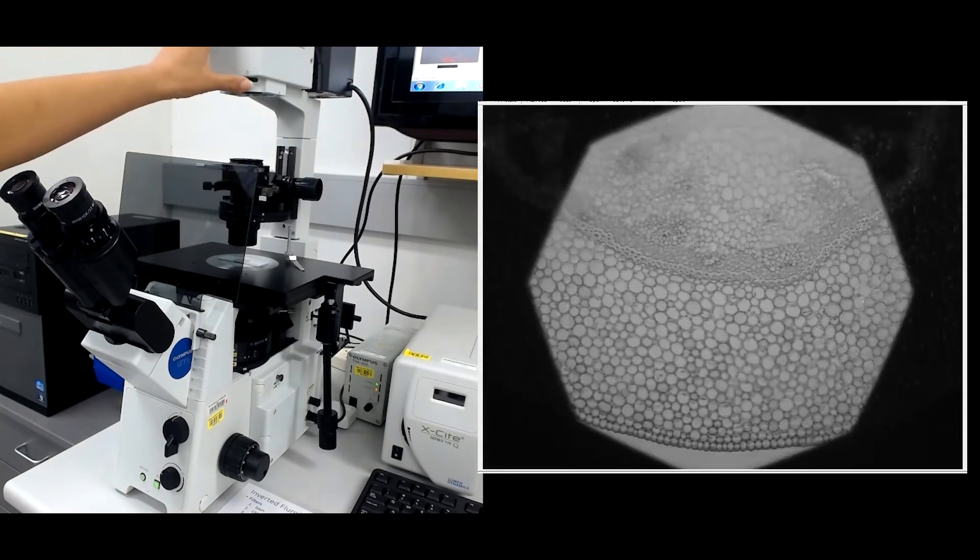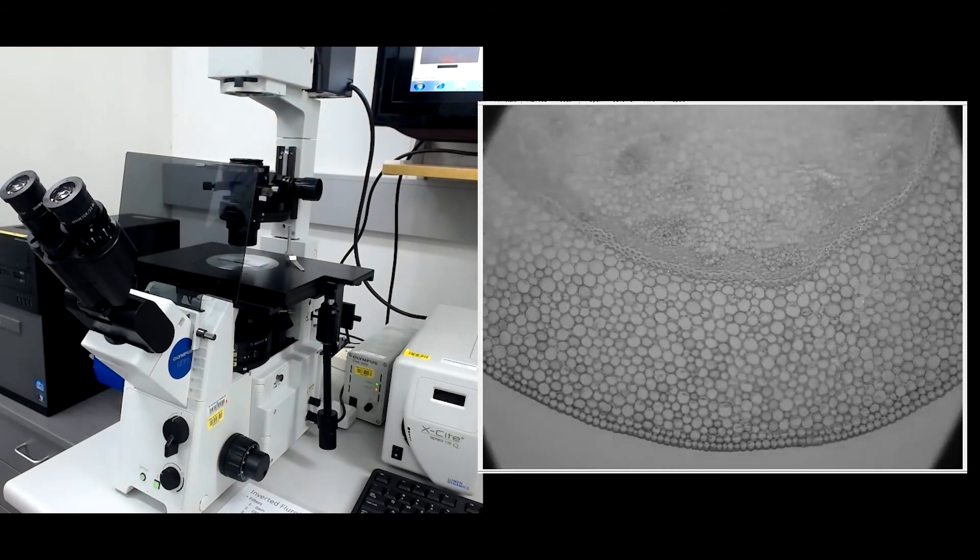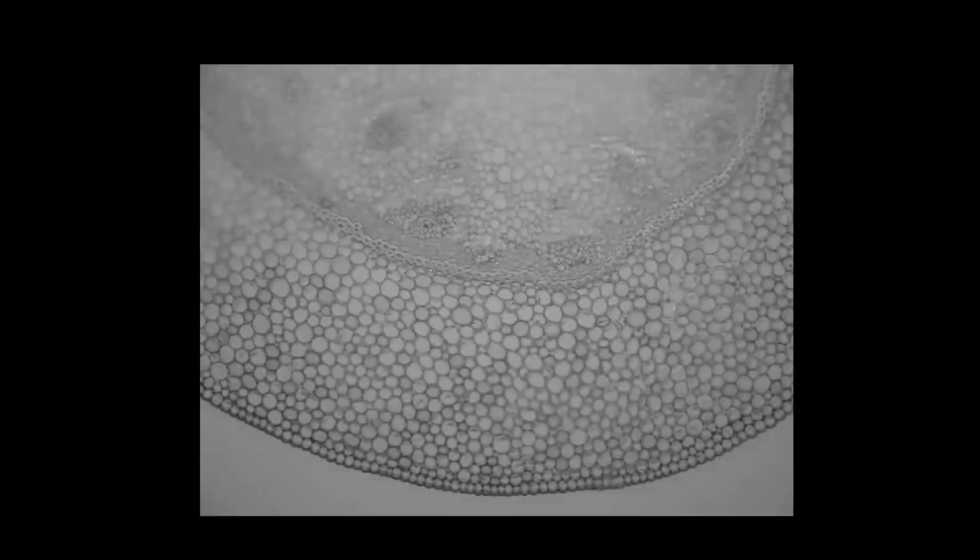Open the field stop so that the polygon is just outside the field of view. Now that the condenser is centered, you should see that the field of view illumination is pretty even.